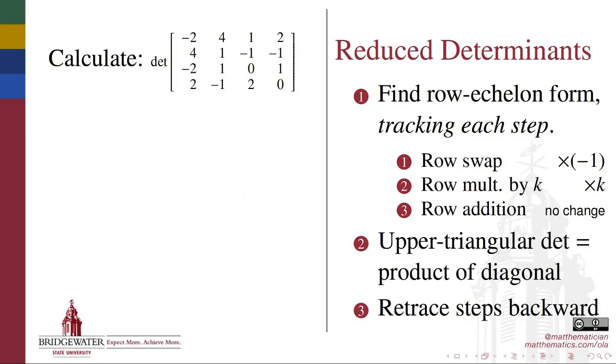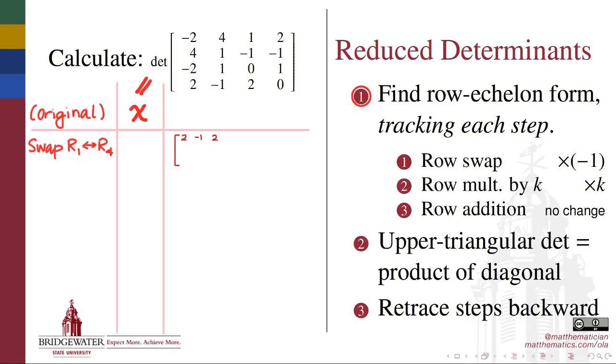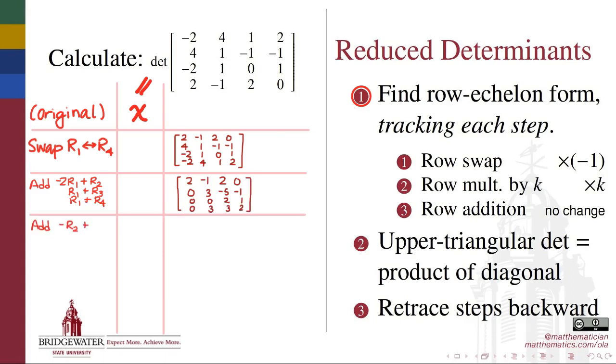To calculate the determinant of a square matrix using elementary row operations, all we need to do is row reduce the matrix, paying careful attention to the steps we're using and the effect that each of those steps has on the determinant of the matrix. For example, for this 4x4 matrix, my first step would be to find its row echelon form. In other words, the row reduced form of this matrix which has all zeros underneath the diagonal, but for which we don't really care about the entries above the diagonal.